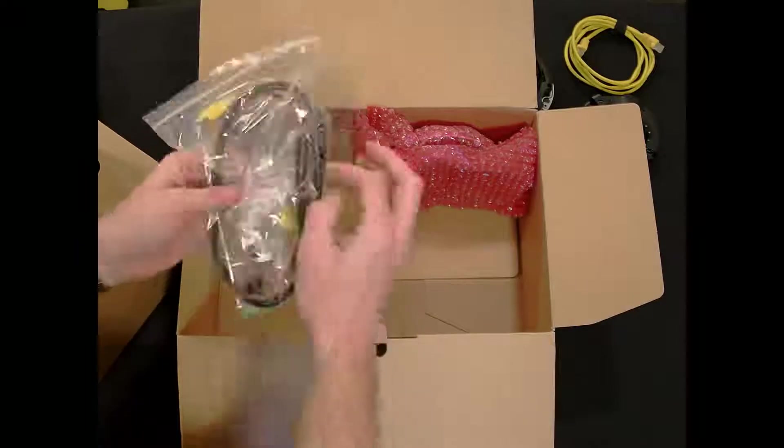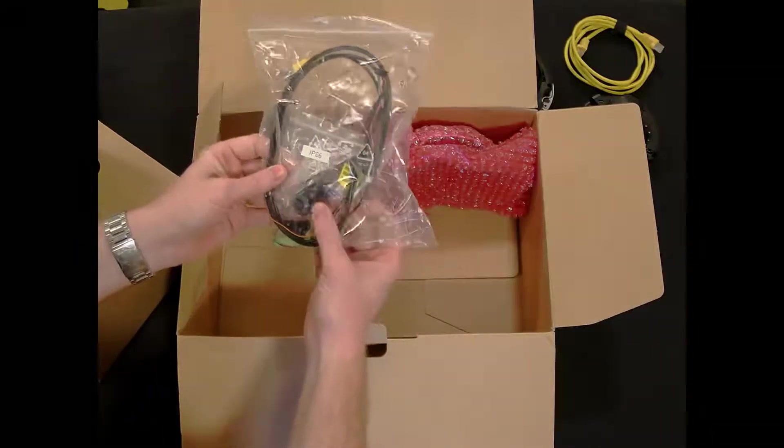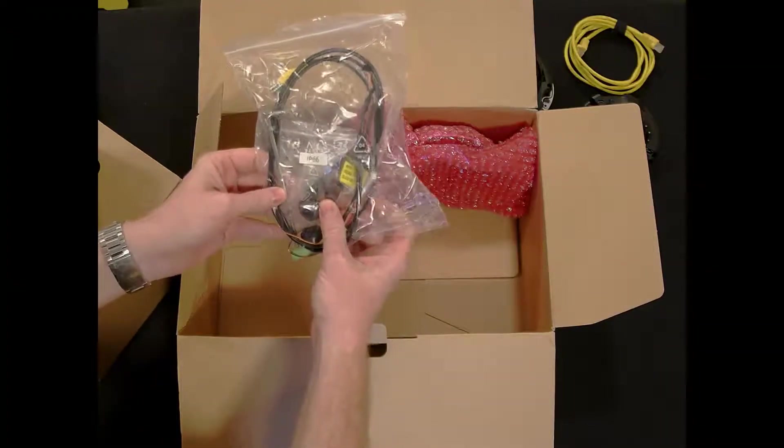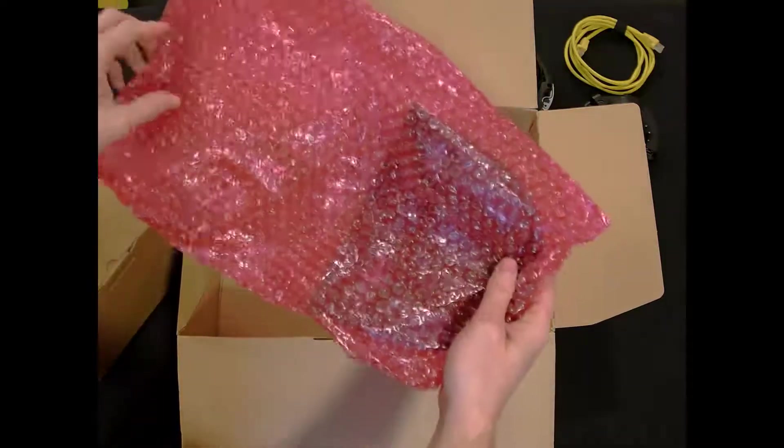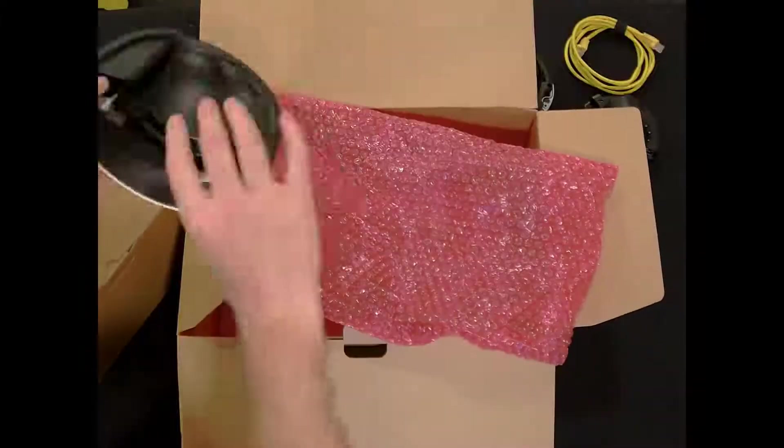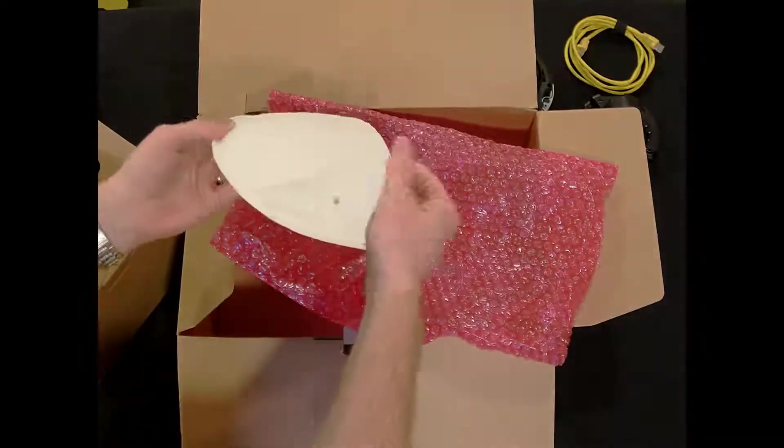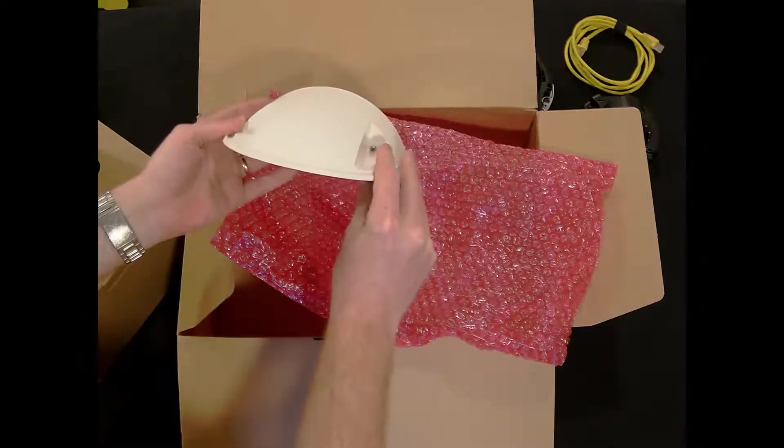We have the cables and grommets, and the network cable tool, and our T20 screwdriver in there. And then we also have a weather shield here to cover the camera for wall mount applications.